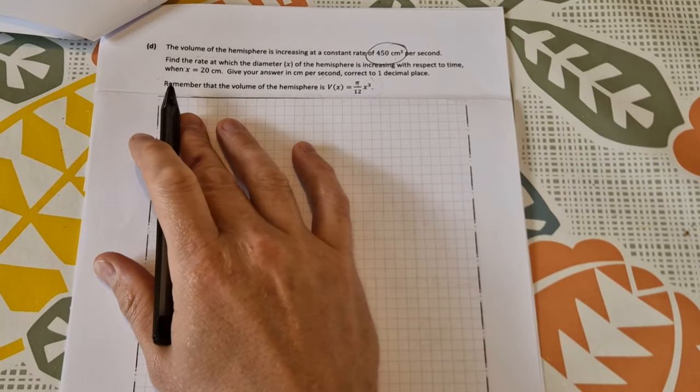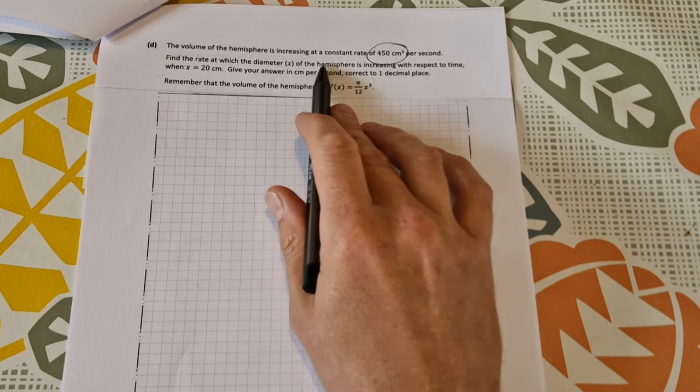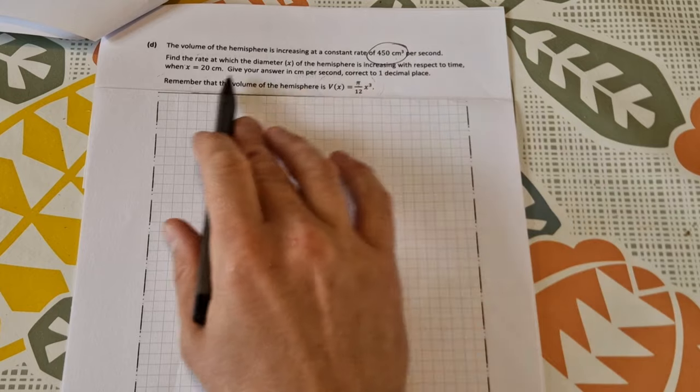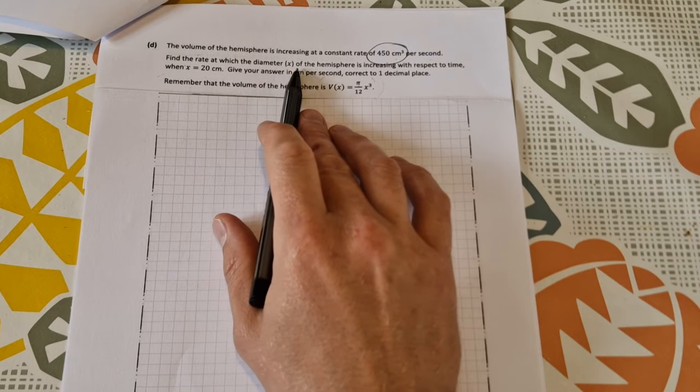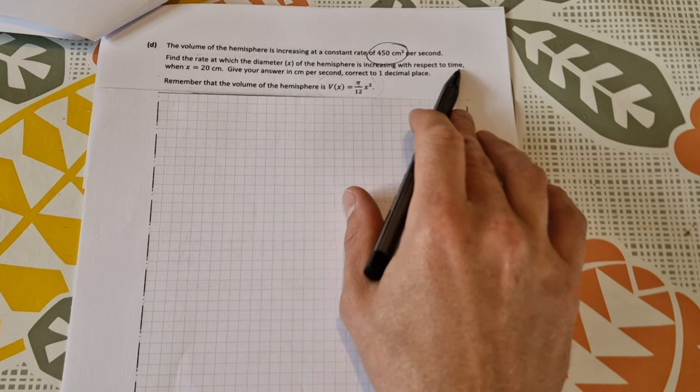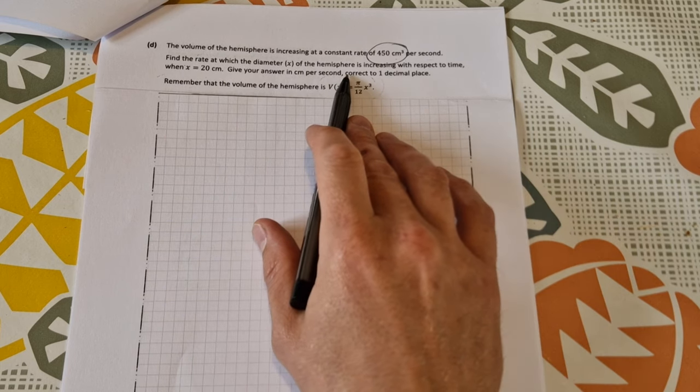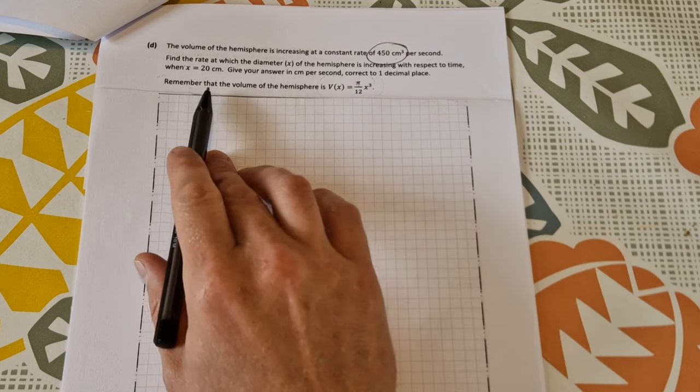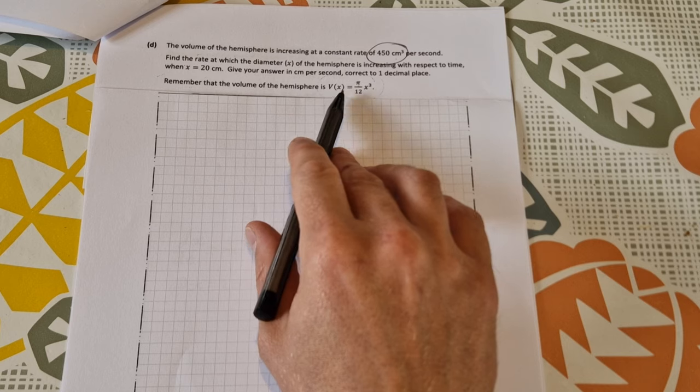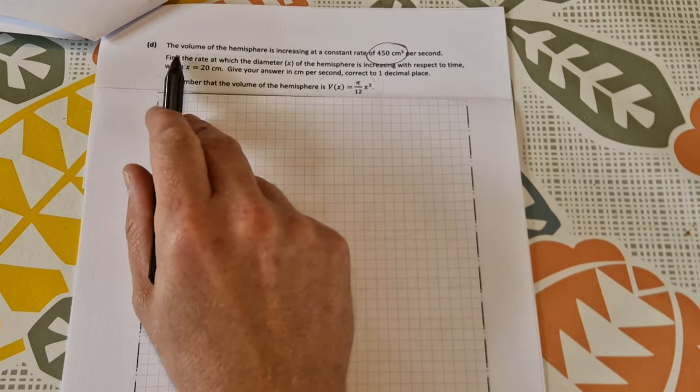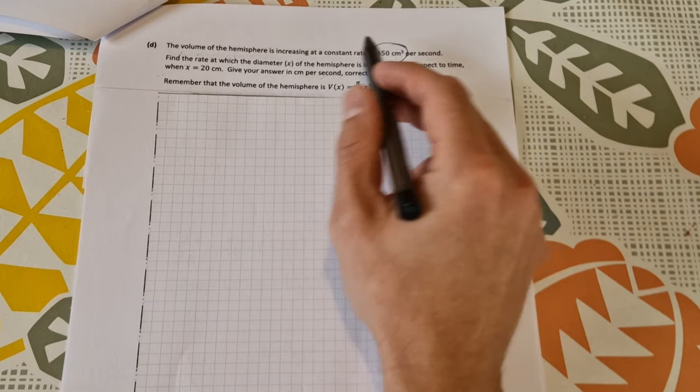So part D, the volume of the hemisphere is increasing at a constant rate of 450 cubic centimeters per second. Find the rate at which the diameter x of the hemisphere is increasing with respect to time when x is equal to 20. Give your answer in centimeters per second, correct to one decimal place. And remember that the volume of the hemisphere is given by this formula here. So it's a rates of change question.